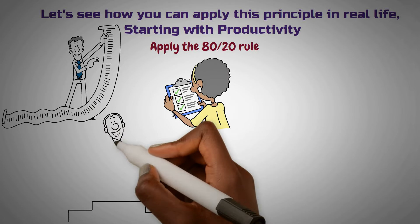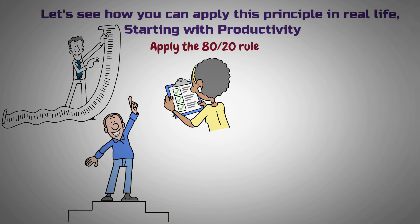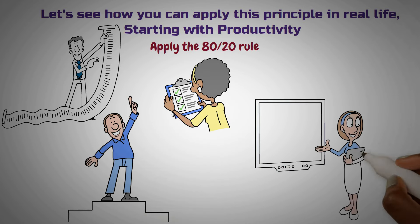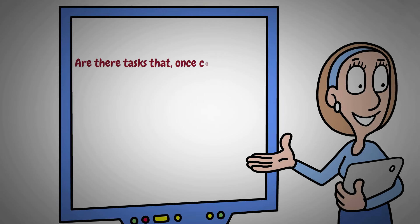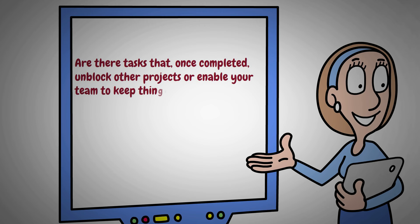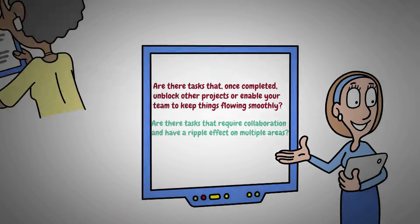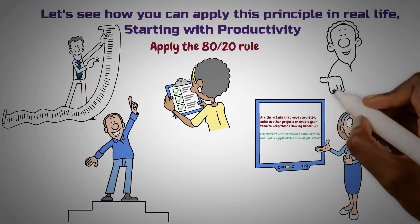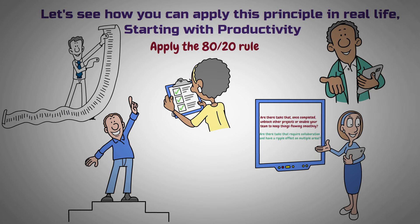These are your priority tasks — the ones that move the needle the most. To identify them, ask yourself a few questions: Are there tasks that, once completed, unblock other projects or enable your team to keep things flowing smoothly? Are there tasks that require collaboration and have a ripple effect on multiple areas? These seemingly small tasks can often have a big impact on overall productivity.